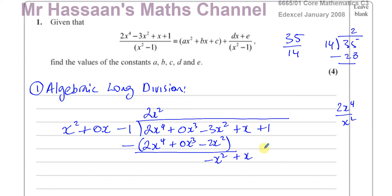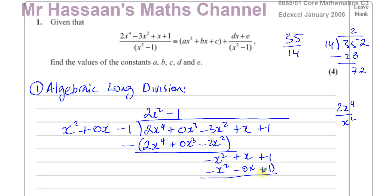Now, how many times does x squared go into minus x squared? That's minus 1 times. So minus 1 times x squared gives minus x squared; minus 1 times 0x gives plus 0x; and minus 1 times minus 1 gives plus 1. Subtracting: minus x squared minus minus x squared becomes 0; x minus 0x gives x; and 1 minus 1 is 0. So you're left with just x as your remainder.